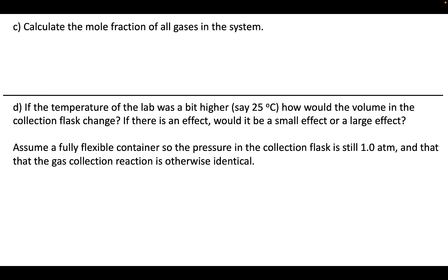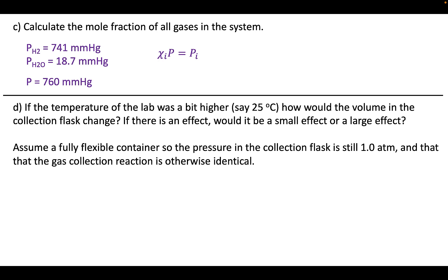Next we want to know what the mole fraction of all the gases in the system are, keeping in mind the pressure data from the previous question: we know P(H₂), P(H₂O), and the total pressure. The simplest way to relate pressure, partial pressure, and mole fraction is through this equation: the mole fraction of species i times the total pressure equals the partial pressure of that species. This means that if a system is 20% oxygen, oxygen is responsible for 20% of the pressure — 20% multiplied by total pressure gives the partial pressure of just oxygen. We can relate the fraction through the partial pressure and the total pressure. If hydrogen is responsible for 90% of the pressure, it must be 90% of the gas present.